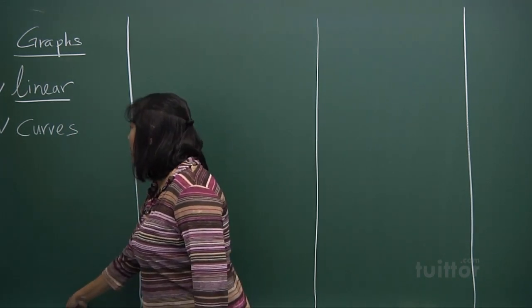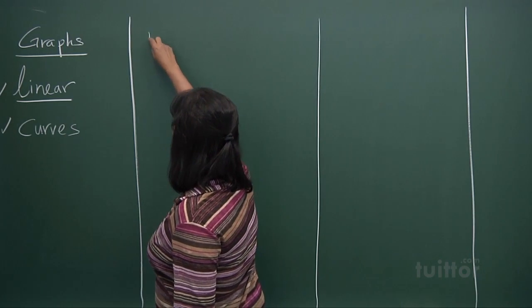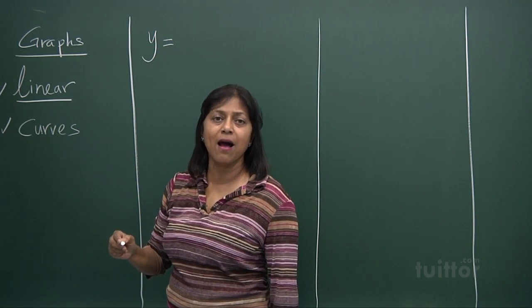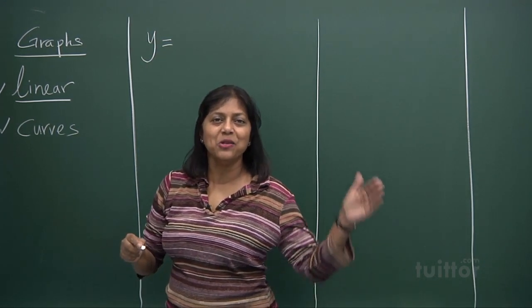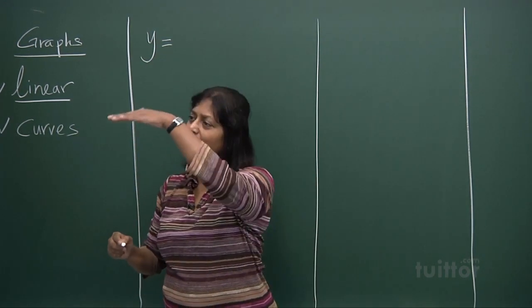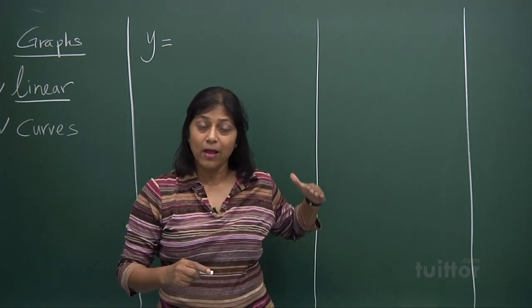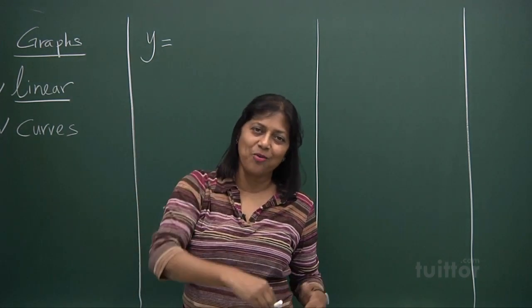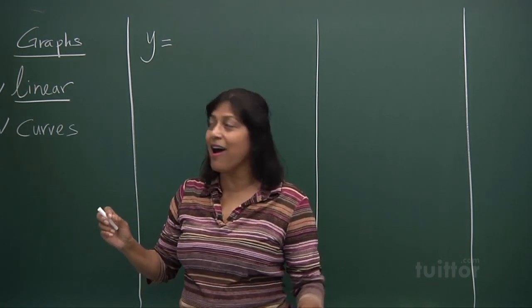When we talk about linear, the word linear tells us it's a straight line. So it's about straight line graphs. Do they have a turning point? No, it goes straight up or straight down.